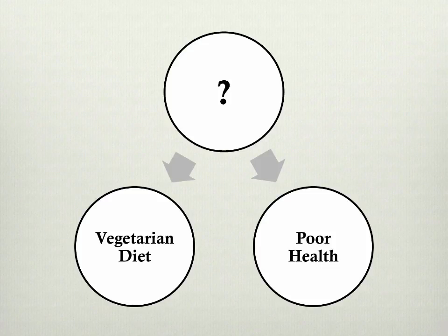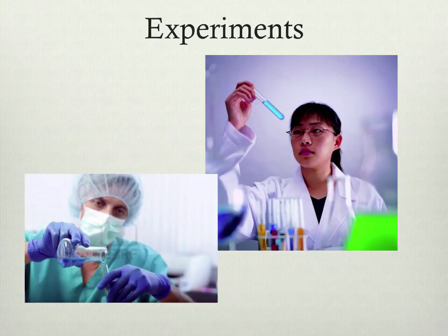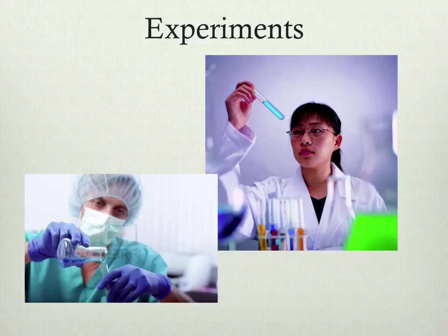The way that you'd go about proving that one thing causes another is by going beyond simply doing a correlational study and doing a special kind of study called an experiment. We tend to think of experiments in vague terms as this thing that scientists do in laboratories with chemicals and lasers, but an experiment could be done with a pen and pencil with very simple tools. The point of an experiment is to solve that issue of not being able to prove causation — to prove that one thing causes another.